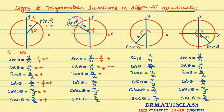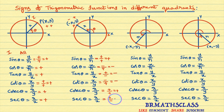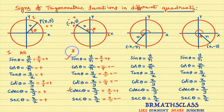Cos theta is defined as x by r. In the second quadrant x is negative — negative divided by positive is negative. Tan theta is y by x — y is positive, x is negative — total expression is negative. Similarly, cot (x/y) is negative divided by positive — negative. Cosec (r/y) is positive divided by positive — positive. Sec (r/x) is positive divided by negative — negative. So in the second quadrant, sin theta and cosec theta are positive; remaining all trigonometric functions are negative.